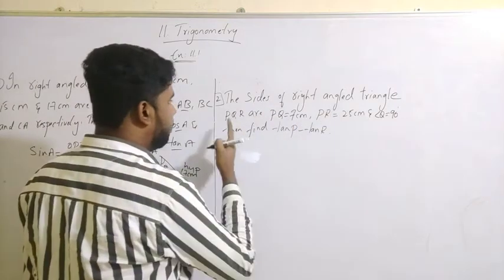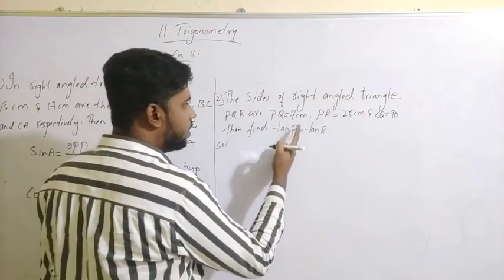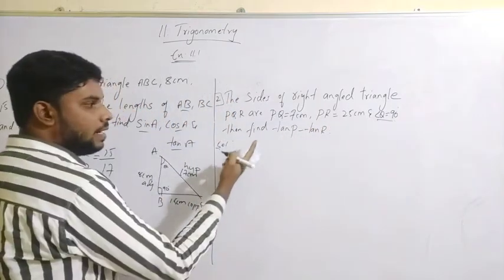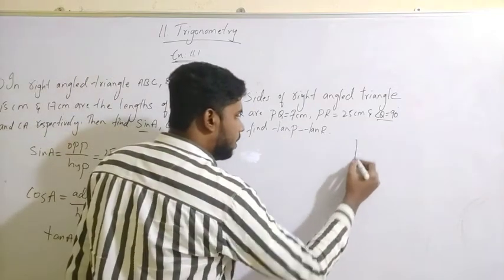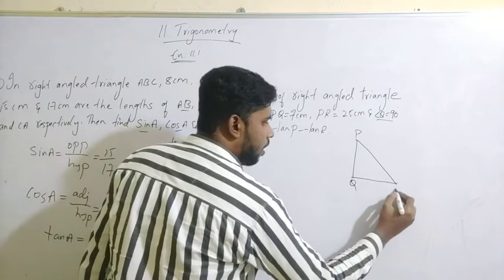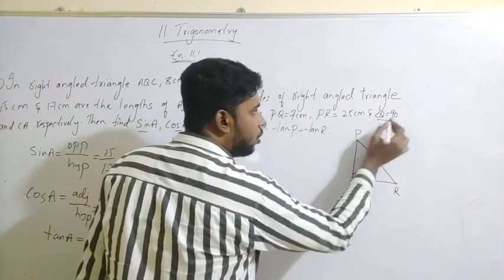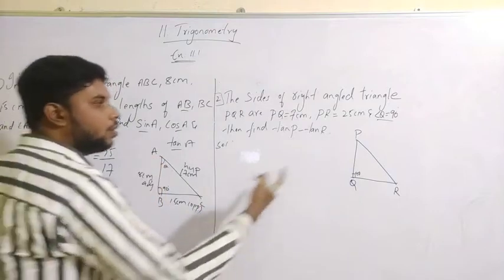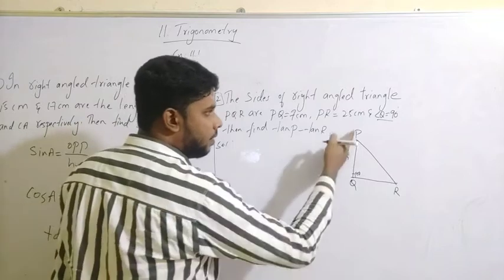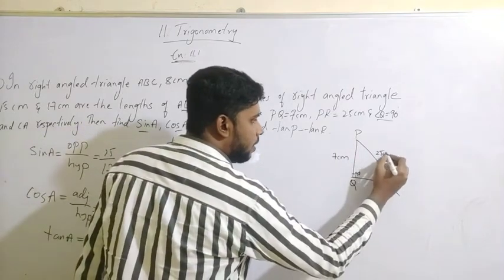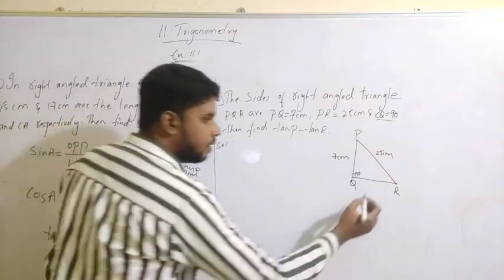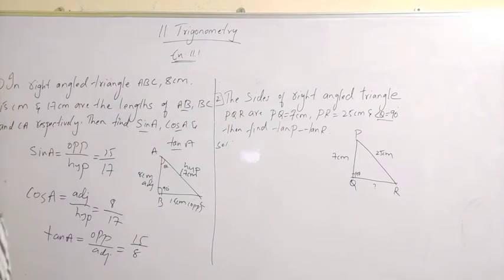Next question: the sides of a right angle triangle PQR are PQ = 7 cm, PR = 25 cm, and angle Q is 90 degrees. Find tan P minus tan R. Here the right angle is at Q. The length of PQ is 7 cm and the length of PR is 25 cm. Two sides of the triangle are given; we have to find the third side.